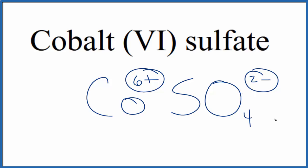If we had three of these sulfate ions here, 3 times 2 minus, that's 6 minus, that would balance the 6+. We would need to put parentheses around the sulfate, since we have three of them, and that would give us Co(SO4)3 as the formula for cobalt (VI) sulfate.